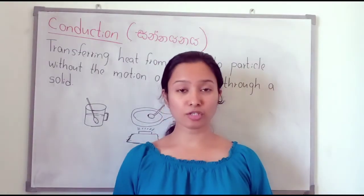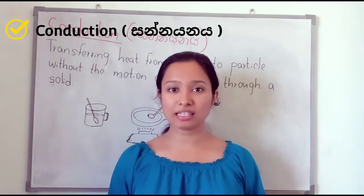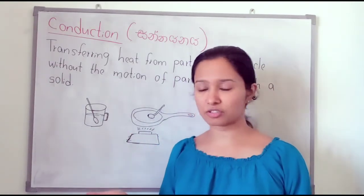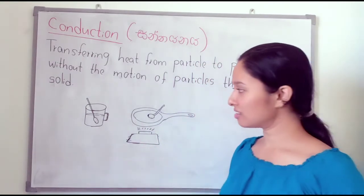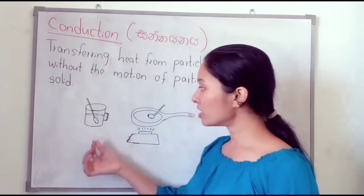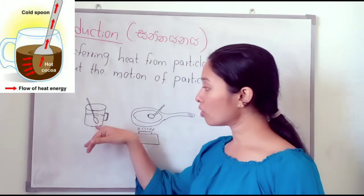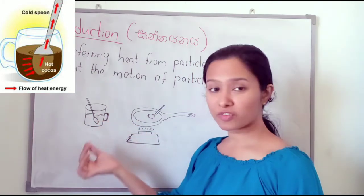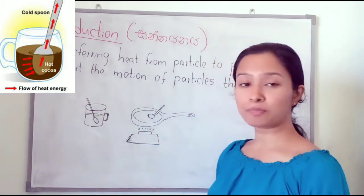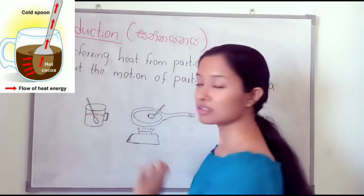The first heat transferring method is conduction. Look at this figure — this is a hot cup of tea. When we put a metal spoon into a hot cup of tea, we can feel heat at the far end of the spoon.